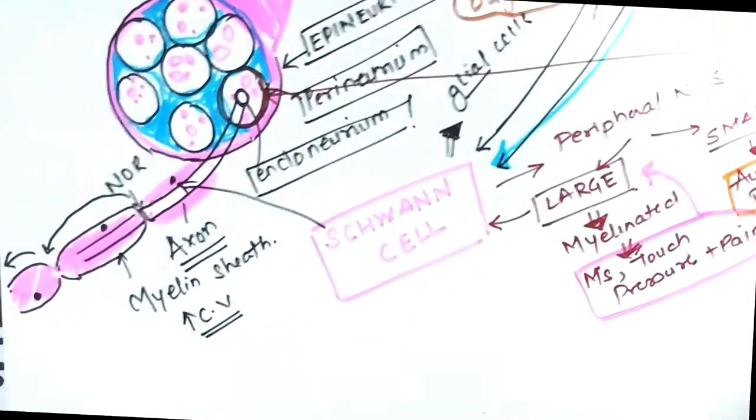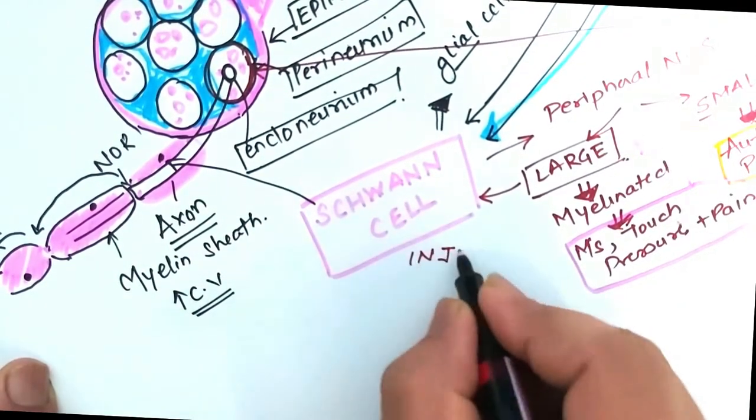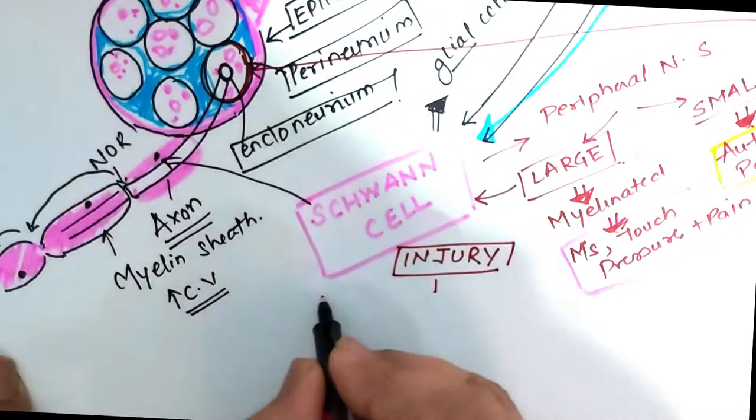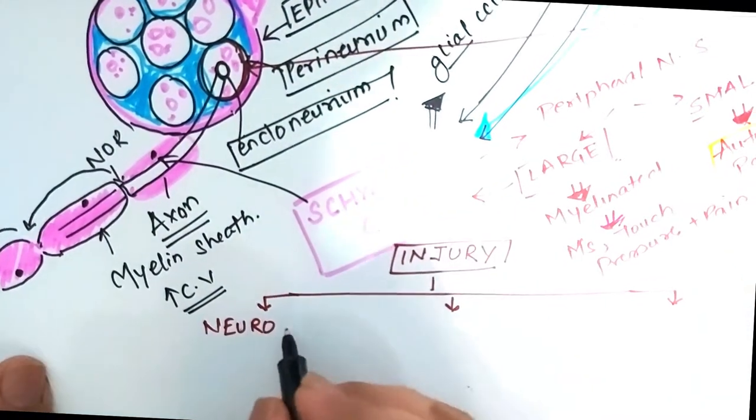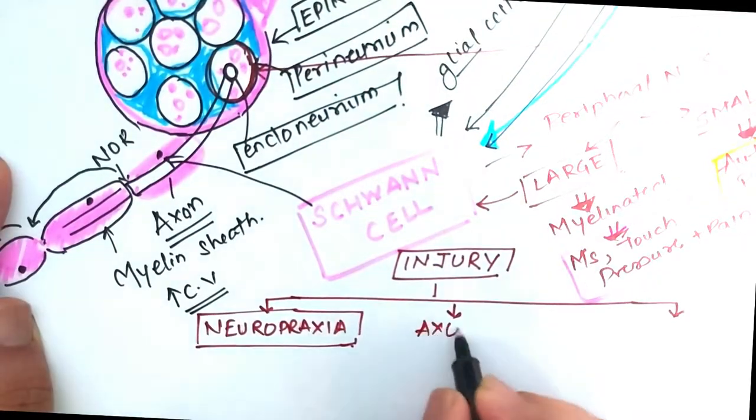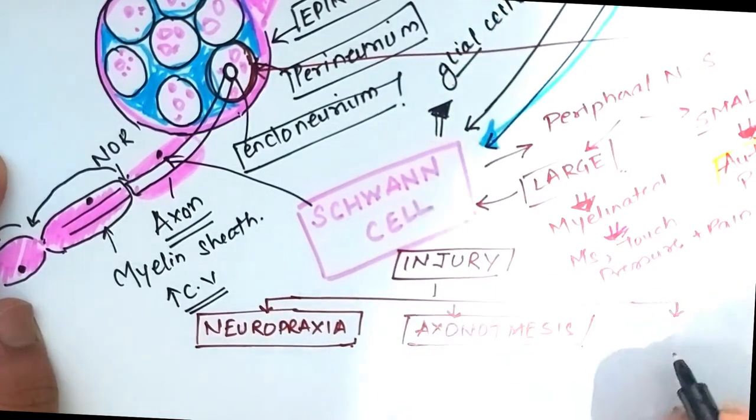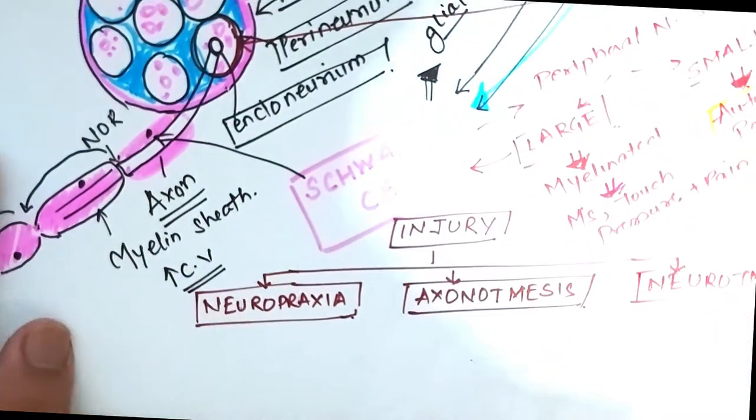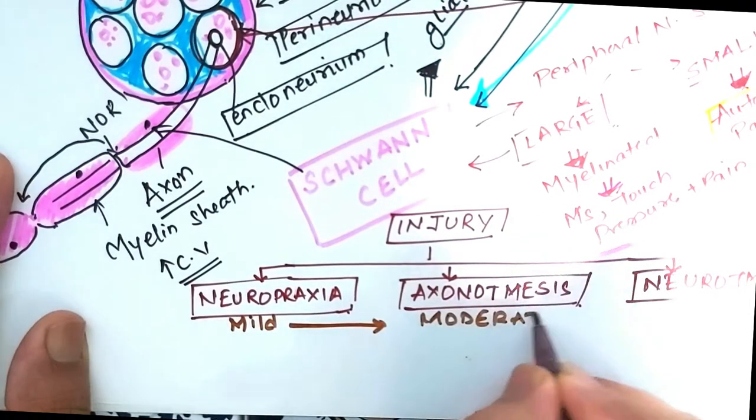So injuries to the peripheral nerves are usually classified into three categories based on the extent of anatomical structural damage to the peripheral nerves. Based on the severity of the damage, these are classified into neuropraxia, axonotmesis, and neurotmesis - mild to moderate to severe forms of peripheral nerve injury.